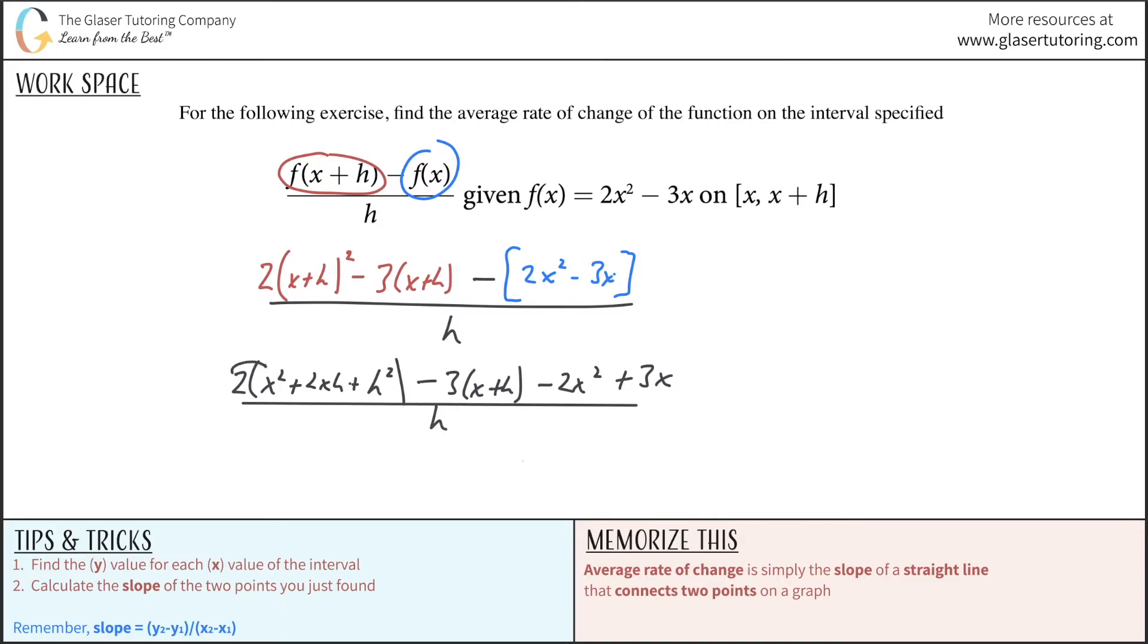Now distribute the 2. So we're going to distribute that 2. So now we got 2x squared plus 4xh plus 2h squared, minus now do distribute the 3, minus 3x minus 3h minus 2x squared plus 3x. And this is all over now h. Now condense some stuff and simplify whatever you can. Notice this negative 3x cancel with that positive 3x, this negative 2x squared cancel with that positive 2x squared, and that's all we can really do.